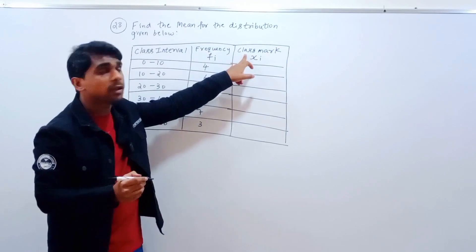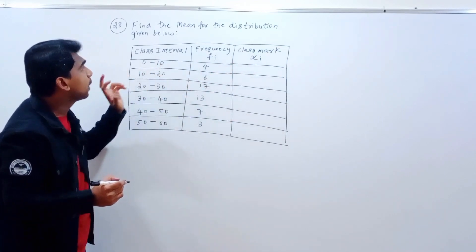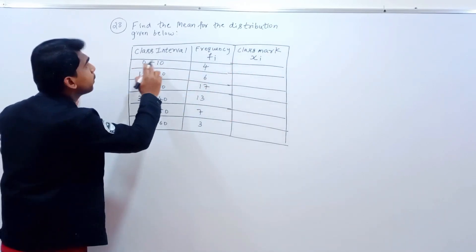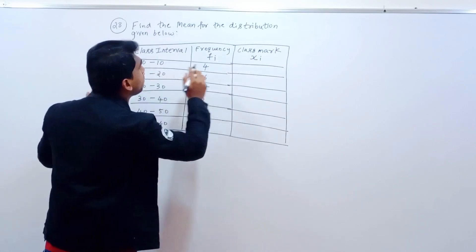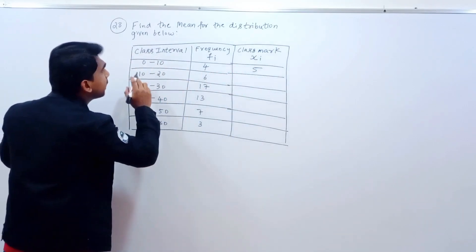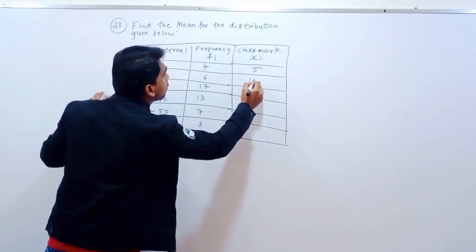Class mark formula: lower limit plus upper limit by 2. You add and divide by 2. 0 plus 10 by 2 is 5. 10 plus 20, 30 by 2 is 15.